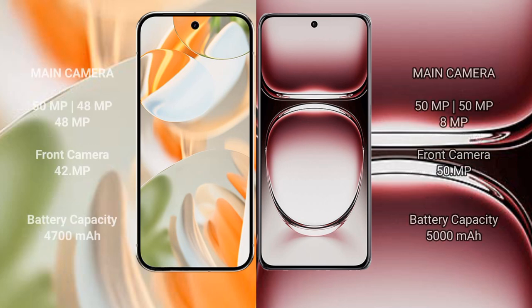The Google Pixel 9 Pro features a triple rear camera setup with 50MP, 48MP, and 48MP lenses, and a 42MP front camera. The Oppo Reno 12 Pro also features a triple rear camera setup with 50MP and 8MP lenses, and a front camera.